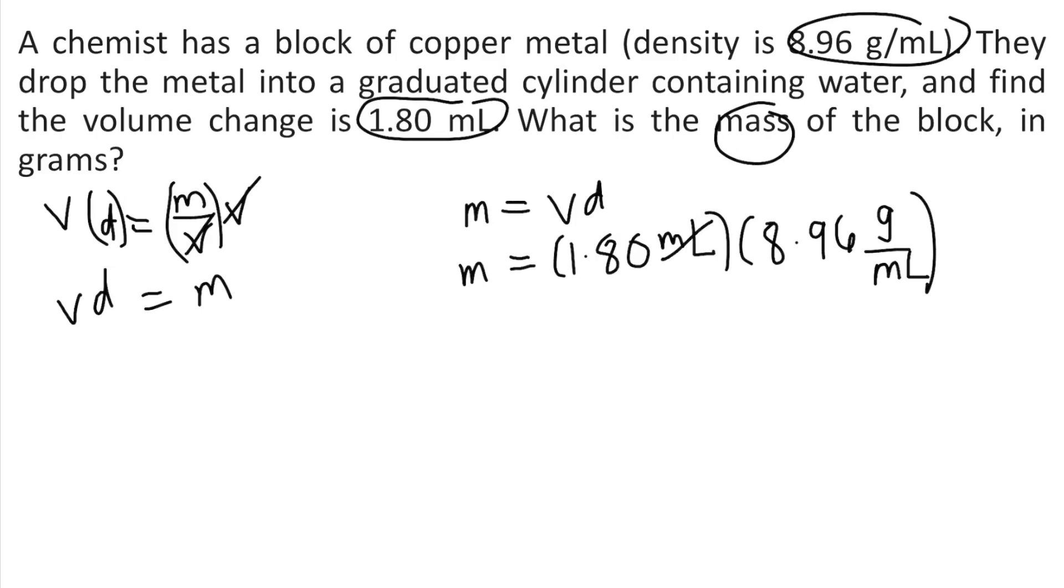As you can see, the ml's would cancel out, so the remaining unit is grams. Grams, as we know, is the unit for mass. So all you need to do is multiply 1.80 times 8.96 and you will get approximately 16.128 grams. And this is the answer.